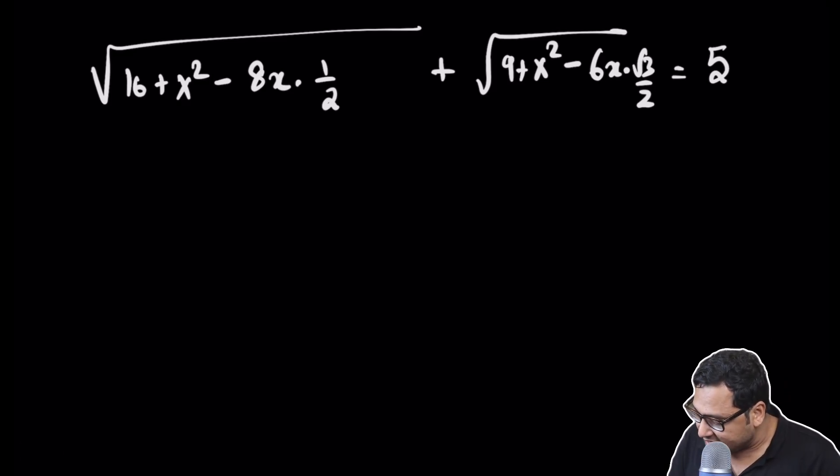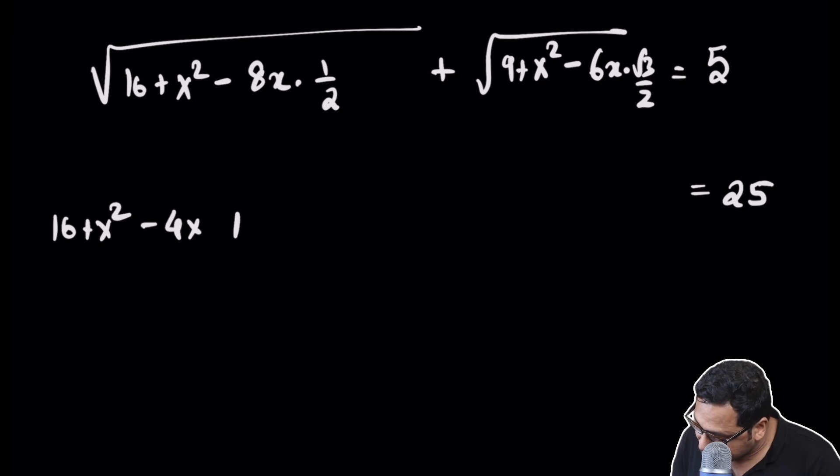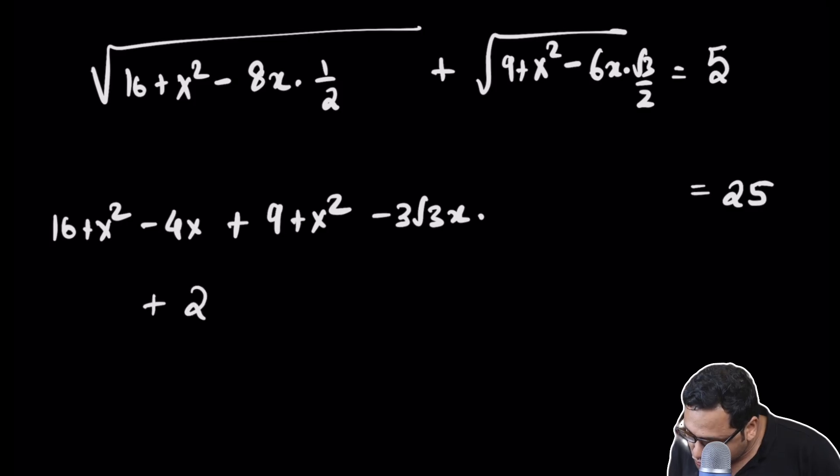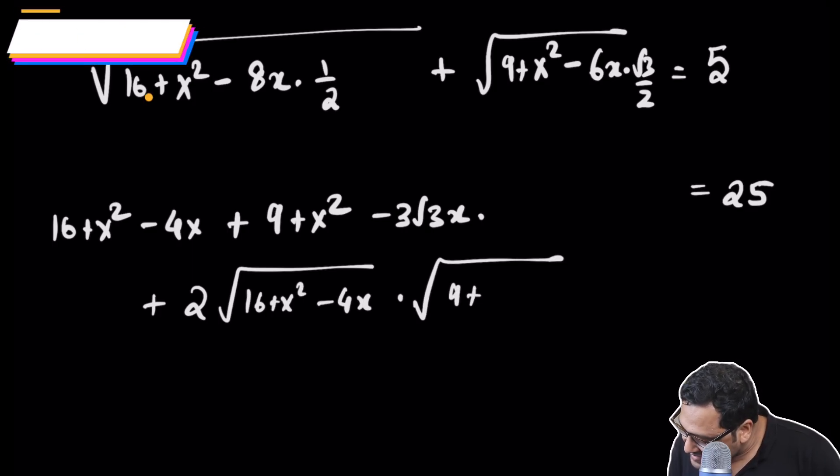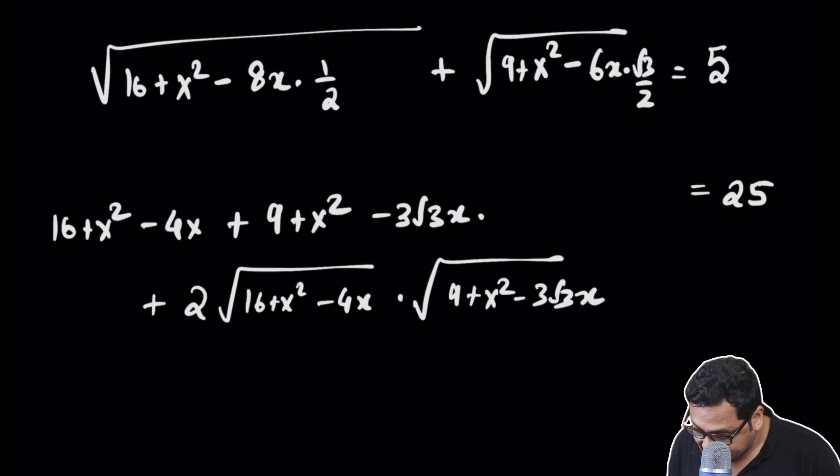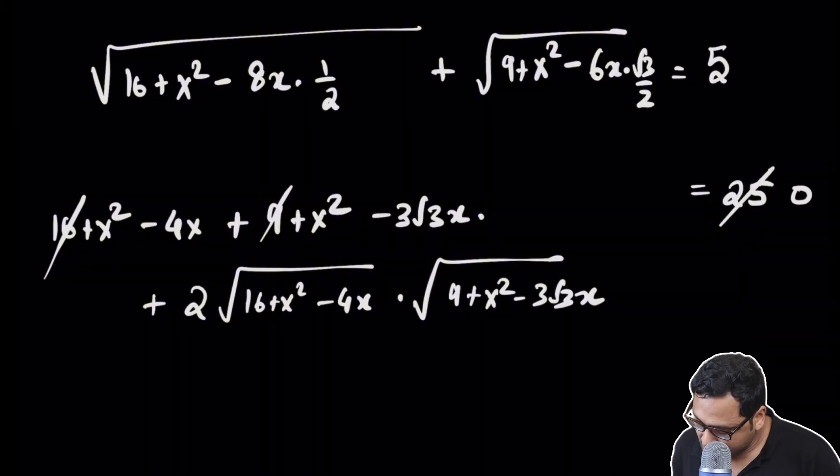If I square both sides I get 25 on the right hand side and on the left hand side I will have 16 plus X squared minus 4X plus 9 plus X squared minus 3 root 3X (I have squared them so the square root is gone) plus 2AB. So 2 times (16 plus X squared minus 4X) times (9 plus X squared minus 3 root 3X). First of all 16, 9, and 25 will cancel off so this is 0 now.